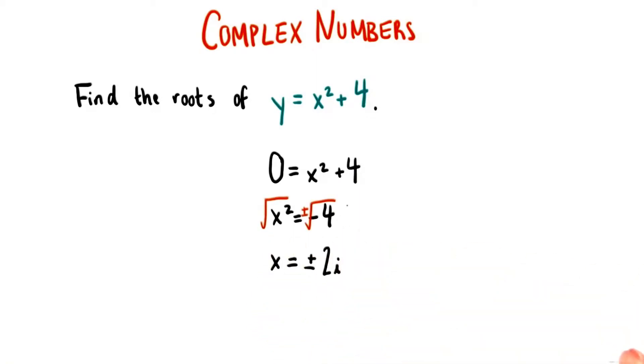When we take the square root of both sides here, we need to make sure that one of those sides has a plus or minus in part of the radical sign. And simplifying the right side gives us that x is equal to plus or minus 2i.